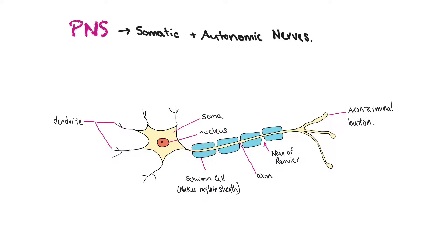There are little gaps and bundles wrapped around the axon. These bundles are called Schwann cells, and collectively these Schwann cells make up the myelin sheath. The myelin sheath acts as insulation — almost like the insulation on an electrical wire — and it allows the signal to travel in one direction and also speeds up transmission of a nerve impulse.